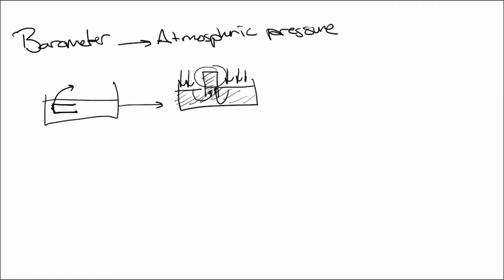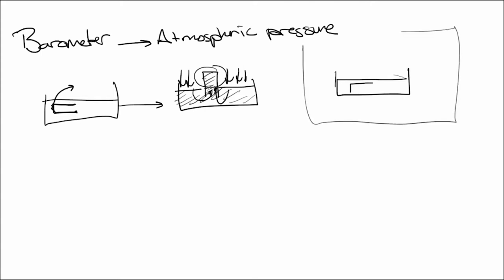If you don't believe that, imagine trying to wash dishes in a vacuum where atmospheric pressure is zero. If you lifted the glass in that vacuum, the liquid would only stay at the same level as the surrounding water — no pressure pushing it up into the glass. Inside the glass would be a vacuum at zero pascal.